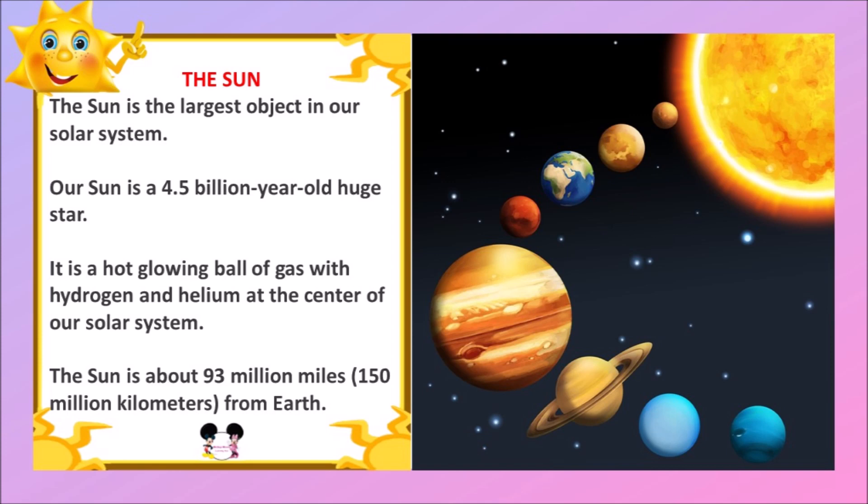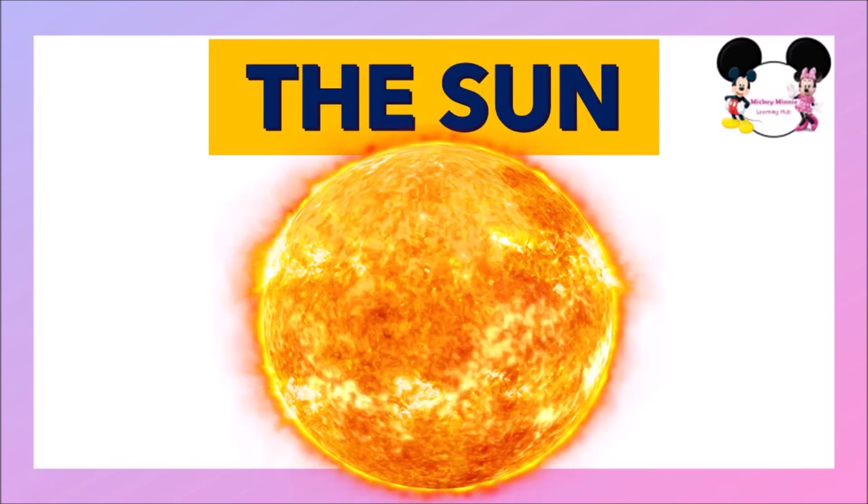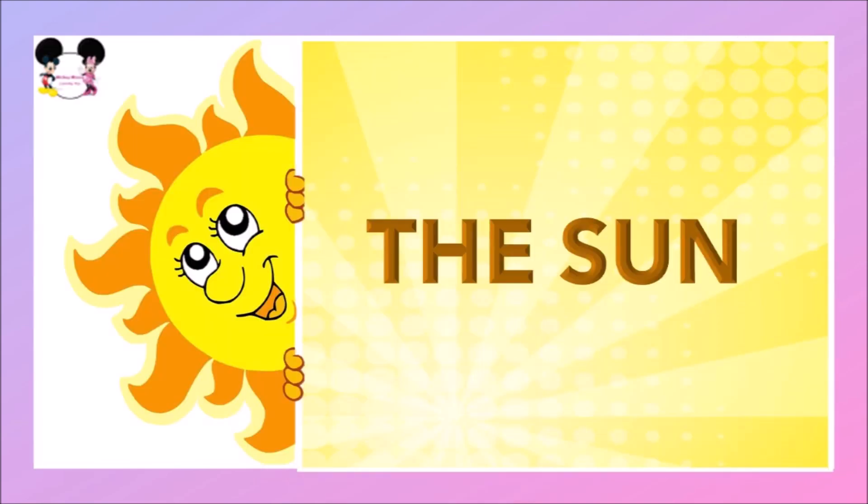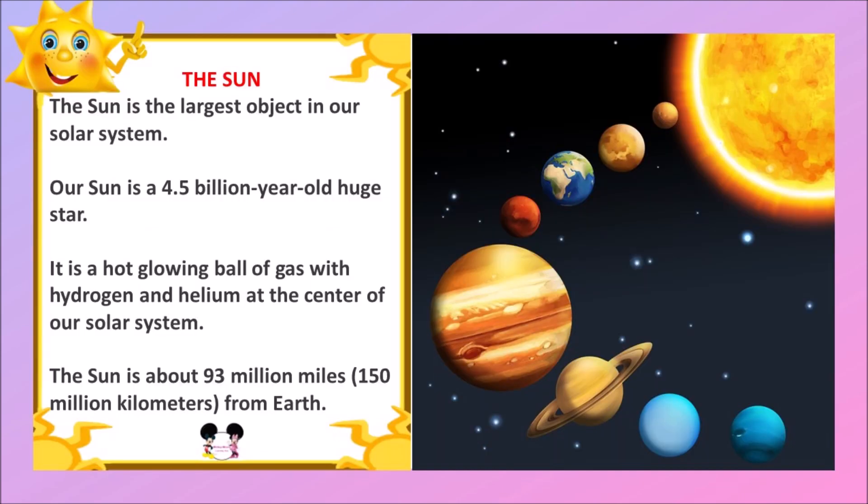Do you know how old is the Sun? Our Sun is 4.5 billion years old. It is a hot glowing ball of gas with hydrogen and helium at the center of the solar system. The Sun is about 93 million miles away from Earth.